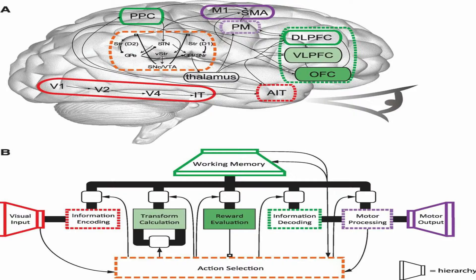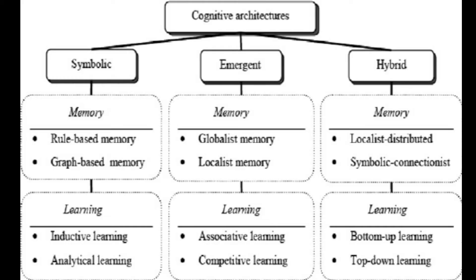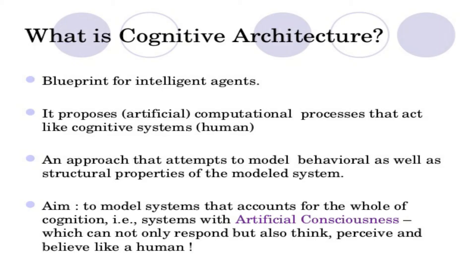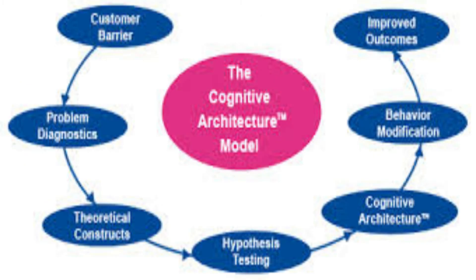One of the main goals of a cognitive architecture is to summarize the various results of cognitive psychology in a comprehensive computer model. However, the results need to be formalized so far as they can be the basis of a computer program. The formalized models can be used to further refine a comprehensive theory of cognition, and more immediately, as a commercially usable model.